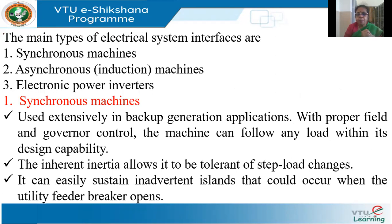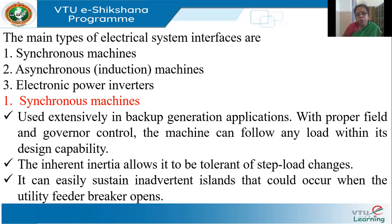The first is synchronous machines. For example, an engine with a synchronous machine — a diesel generator where the prime mover is connected to an alternator. The second type is asynchronous machines, which are induction generators. Induction generators are very commonly used with wind turbines because with varying wind speed it is very difficult to get a constant voltage.